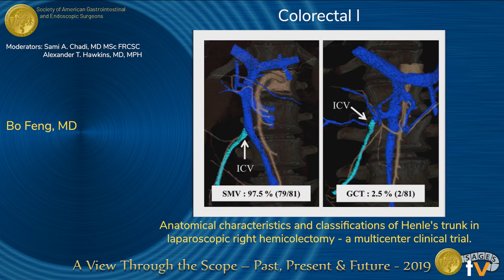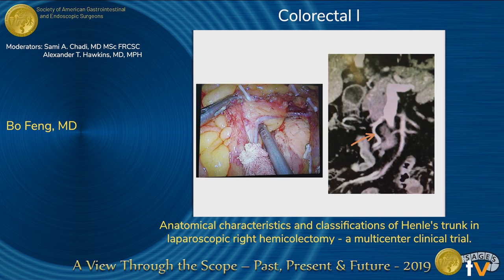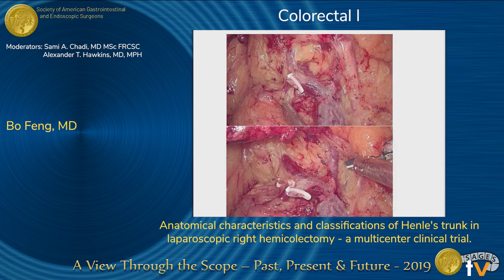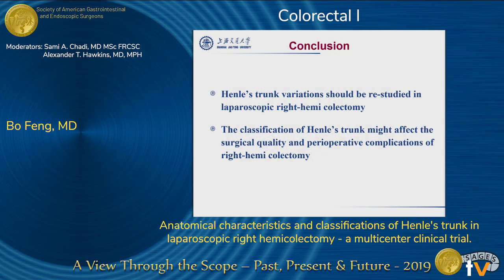Apart from this study, we are also performing pre-operative CT angiography for identification of different branches of the veins. In one interesting case, the ICV originated directly into Henle's trunk. Unfortunately we did not videotape it. In conclusion, Henle's trunk variation should be re-studied in the laparoscopic right hemicolectomy group, and we hope our study can improve the quality of surgeries. The classification of Henle's trunk may affect surgical quality and perioperative complications of right hemicolectomy.